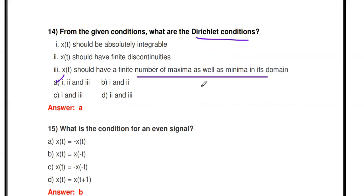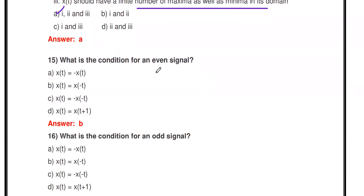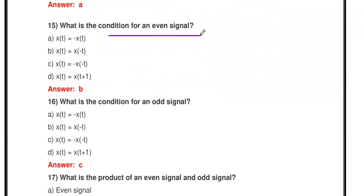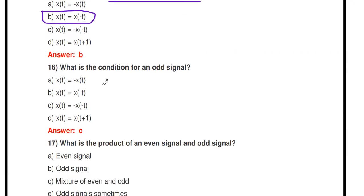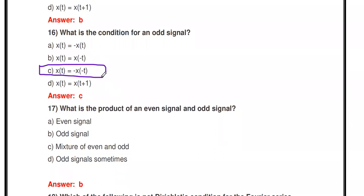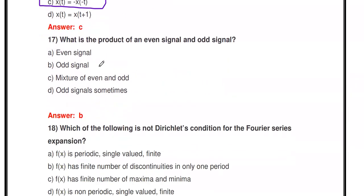Next question: What is the condition for an even signal? The condition is x(t) = x(-t). The original signal and its time-reversed version are equal — that signal is called an even signal. The condition for an odd signal is x(t) = -x(-t). If the original signal equals the negative of its time-reversed version, it is an odd signal.